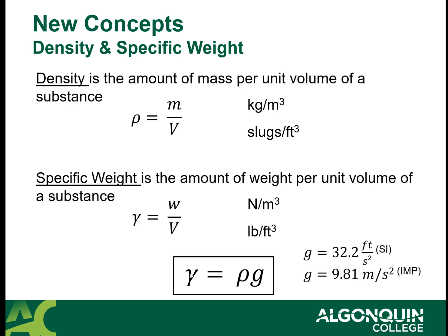The way you get gamma is gamma equals rho g - that's the density times the gravitational constant. When you're dealing with slugs, you're going to use g equals 32.2 feet per second squared to get your specific weight. When you're dealing with mass in kilograms, you're going to use g equals 9.81 meters per second squared.